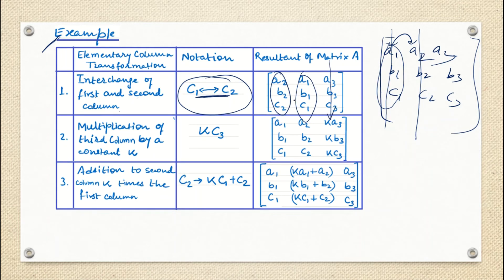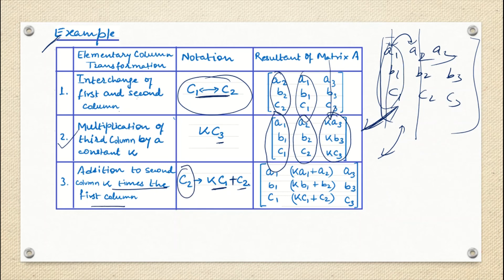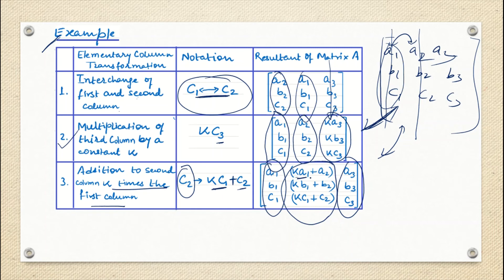The second column operation is multiplication of the third column by constant K — the first two columns remain unchanged and K is multiplied to each element of the third column. The third column operation is C2 → K·C1 + C2, meaning C1 and C3 remain as they are, but C2 is replaced: each element becomes K times the corresponding element in C1 plus the original C2 element, e.g., K·A1 + A2.